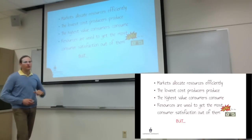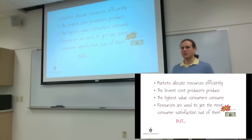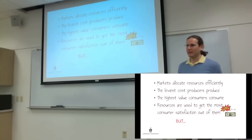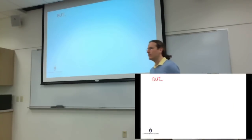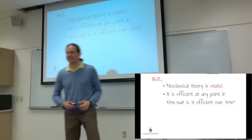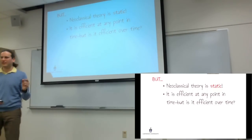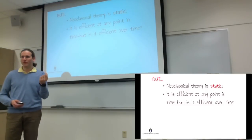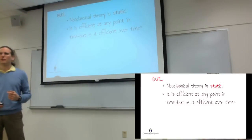Schumpeter wouldn't say that price theory is necessarily wrong or that markets are not good. But this theory does miss some very important features of the capitalist economy. Schumpeter's first critique is that neoclassical theory is static. The market is dynamic, but neoclassical theory looks at one point in time. When we say markets are efficient, we mean they are efficient at one point in time — in a static sense. Schumpeter says that is different from dynamic efficiency, which is being efficient over time.